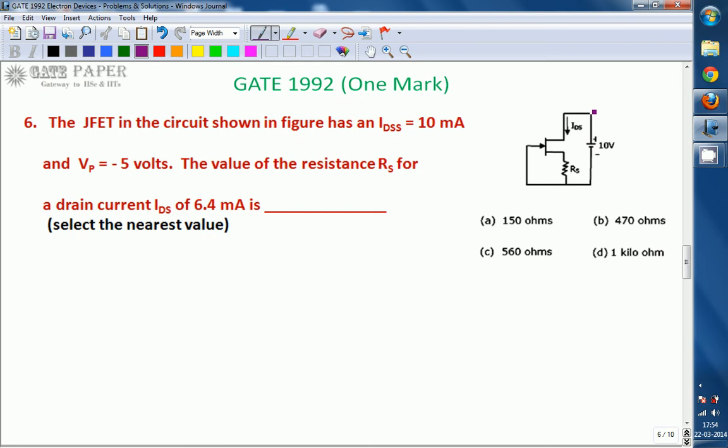What is given is IDSS, drain to source saturation current, given as 10mA. Pinch off voltage is given as minus 5V. And if you want to get a drain current of 6.4mA, what should be the value of RS? Select the nearest value.